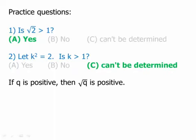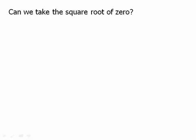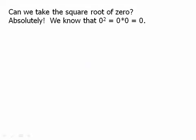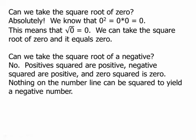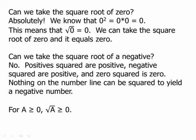If q is positive, then the square root of q is also positive. Can we take the square root of 0? Absolutely — we know that 0 squared is 0, so the square root of 0 equals 0. Can we take the square root of a negative? No. Positive numbers squared are positive, negative numbers squared are positive, and zero squared is 0, so nothing on the number line can be squared to yield a negative number. There are higher forms of mathematics involving square roots of negatives called imaginary numbers, but that is beyond anything on the test. For our purposes, for a greater than or equal to 0, the square root of a is also greater than or equal to 0.